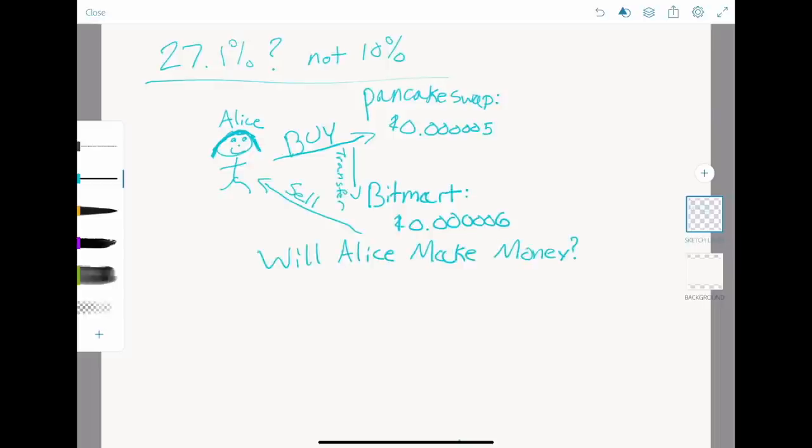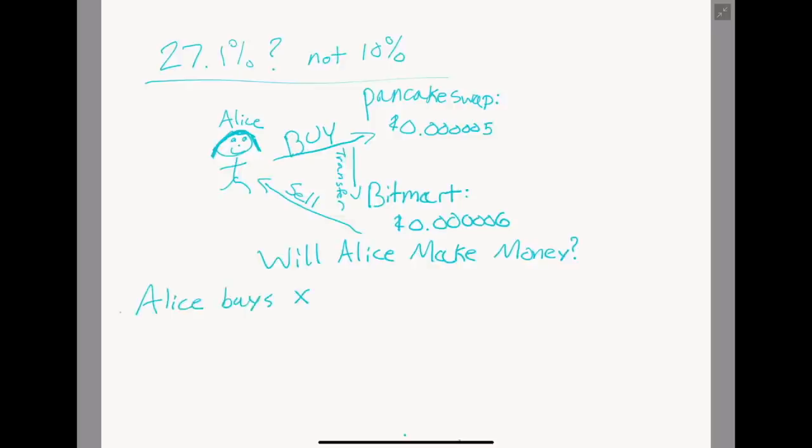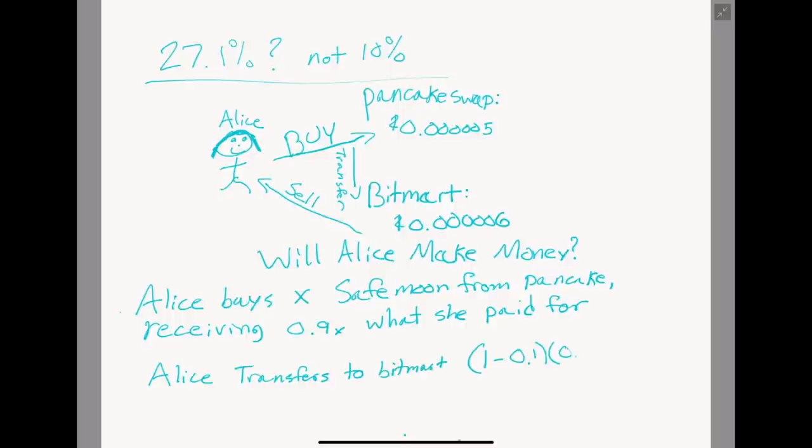Alice notices the price difference and rushes over to PancakeSwap to load up on SafeMoon. Her initial investment does not matter, so we will call it X. Upon purchase, Alice loses 10% of her tokens, resulting in 0.9X of the tokens she would have started with without a tax. When Alice transfers these to BitMart, she loses another 10%, or is left with 0.81X her initial investment.